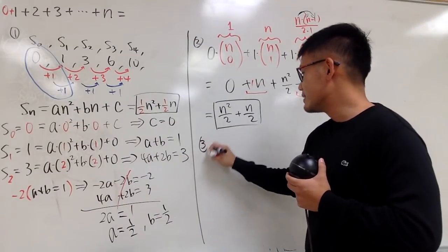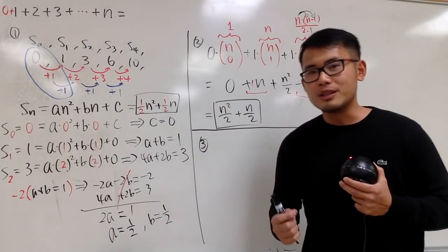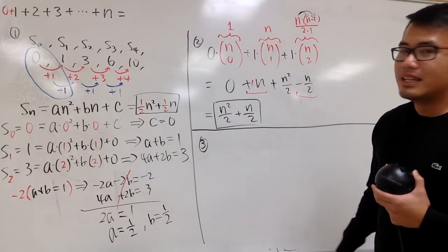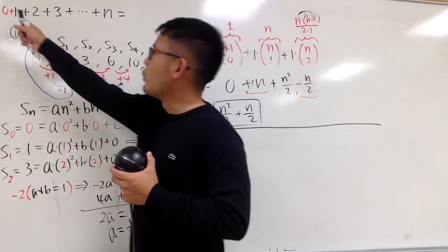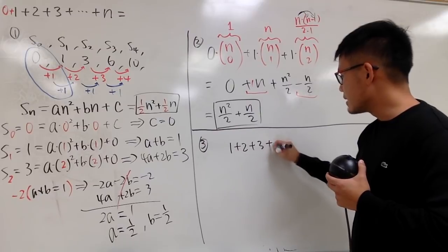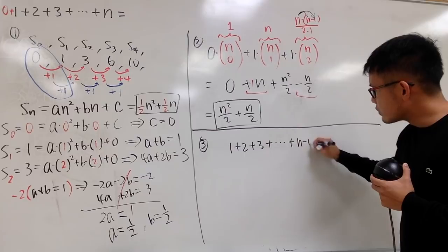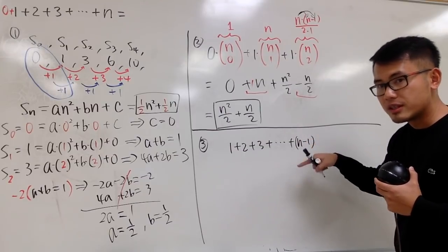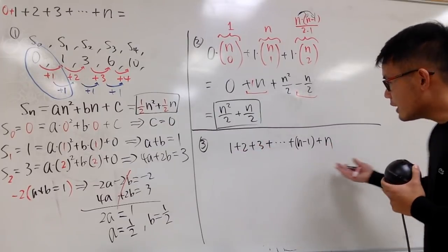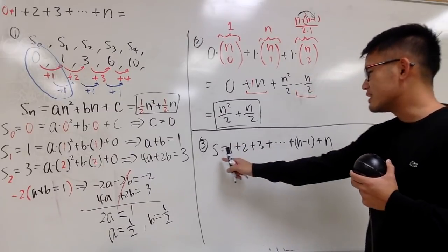Here is the third way — perhaps the most famous and quickest way. We look at Sn equals 1 plus 2 plus 3 plus 4 plus dot dot dot plus n minus 1 plus n.